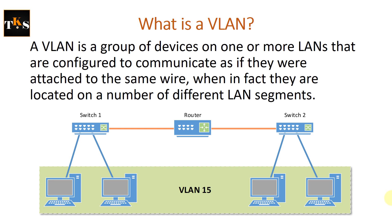So what is a VLAN? A VLAN is a group of devices on one or more LANs that are configured to communicate as if they were attached to the same wire, when in fact they are located on a number of different LAN segments. Looking at this diagram, we see two computers attached to switch one and two other computers attached to switch two, and both of these switches are connected to a router. But all these computers are acting as if they are connected to the same switch.